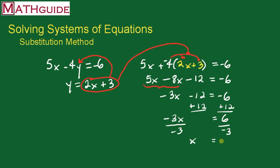The negative 3s cancel, so you divide here and get negative 2. So we have part of the solution now. Our solution is going to be x and y. Remember our solution is always an ordered pair, an x and a y value. We already have our x value.